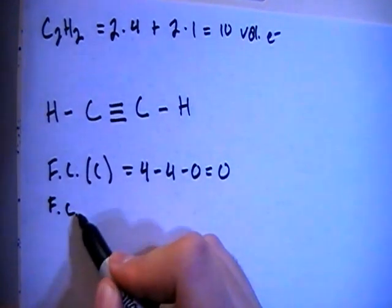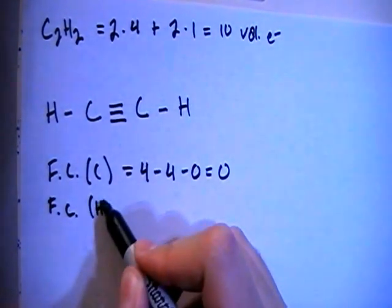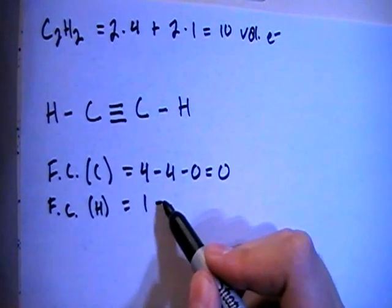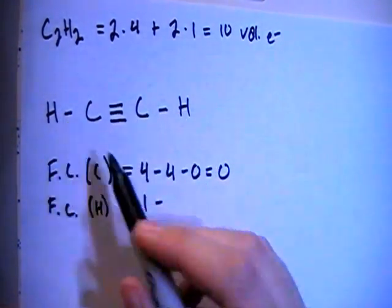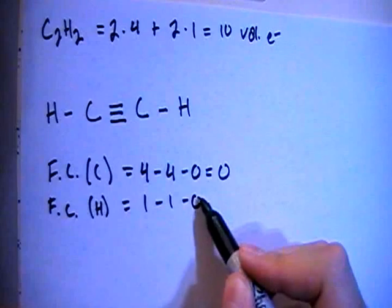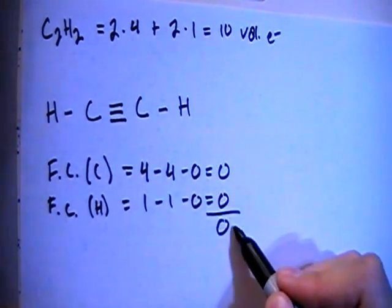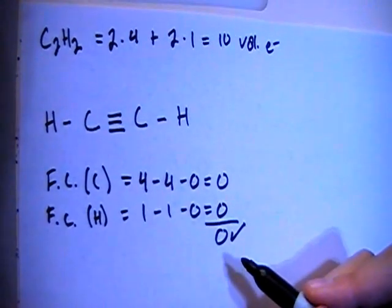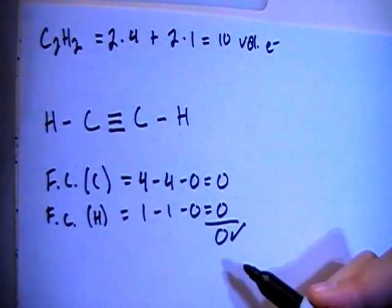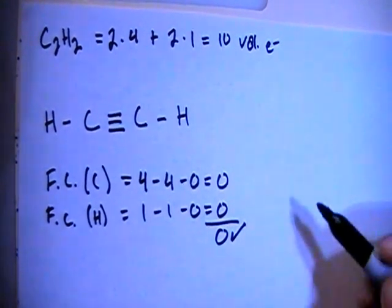And we can now check the formal charges on the hydrogens, which is going to be one electron brought in minus one bond for each hydrogen minus zero non-bonding for a formal charge of zero. If you add that up, it gets you zero, which is what we're looking for because this is a non-charged particle. Now we can talk about shape.